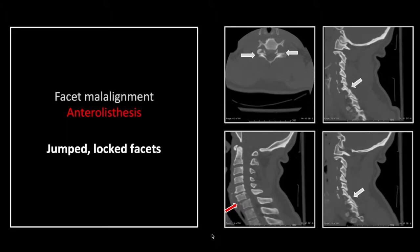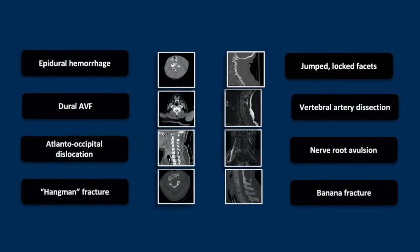That's a case of jumped-locked facets. This actually was a self-induced injury — the patient broke up with his girlfriend and banged his head against a pole, resulting in a whiplash effect to his lower cervical spine.